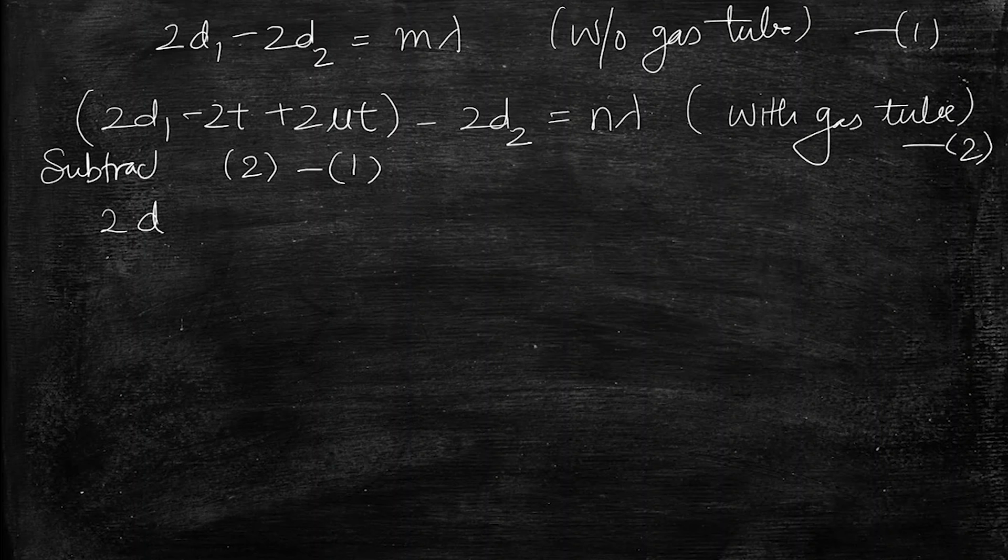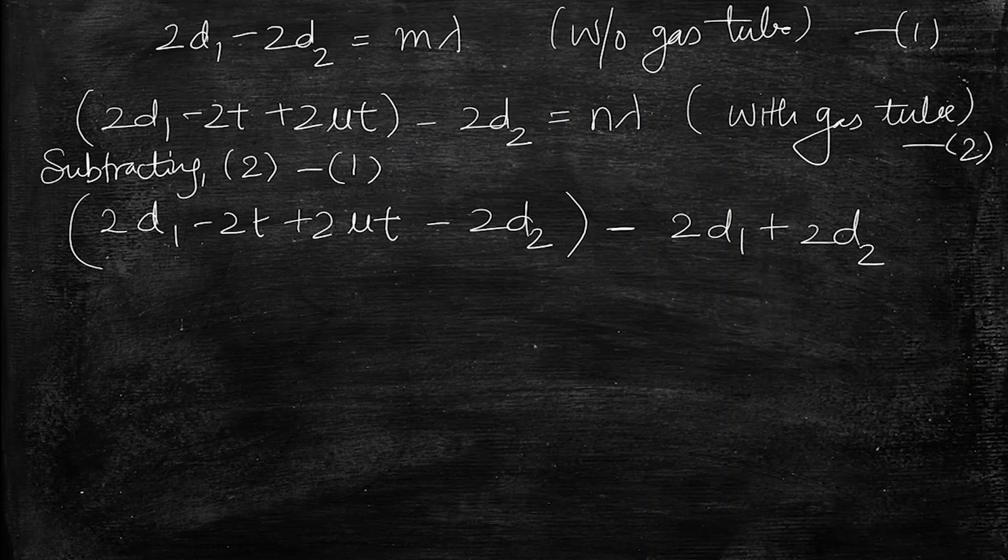This is 2 minus 1, so we are subtracting. So this is 2D1 minus 2T plus 2 mu T minus 2D2, this is the with gas tube minus without gas tube 2D1 plus 2D2, and the right hand side will become n minus m lambda.